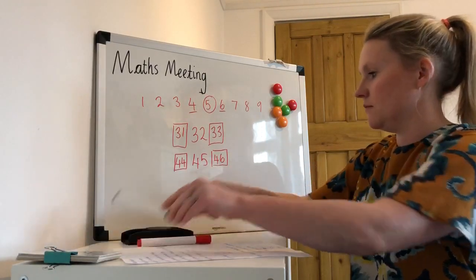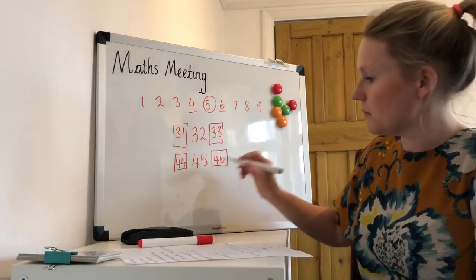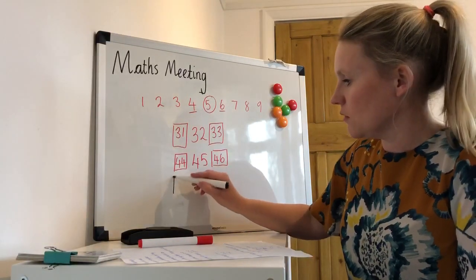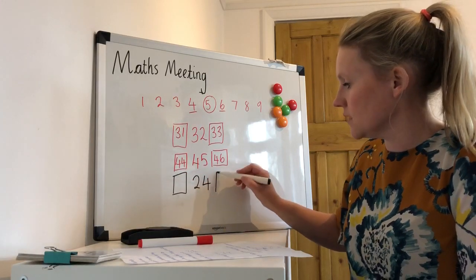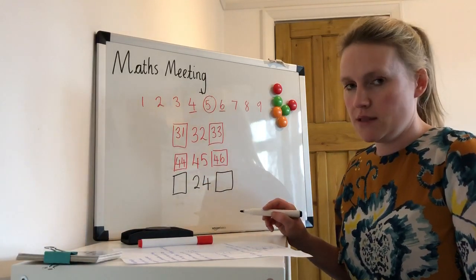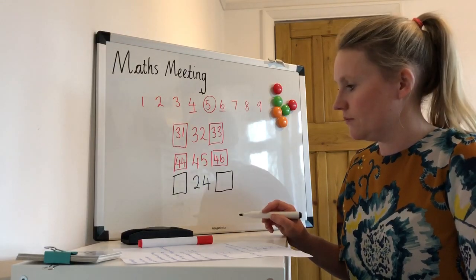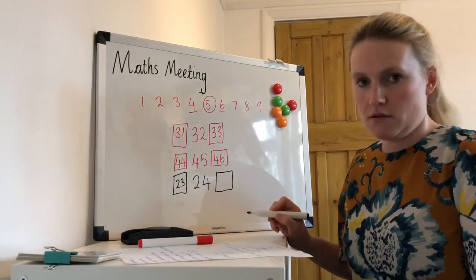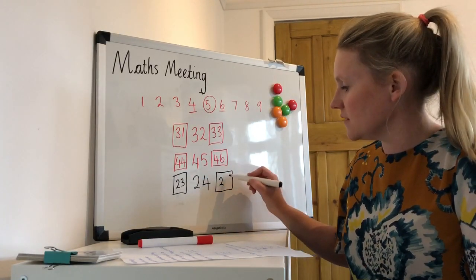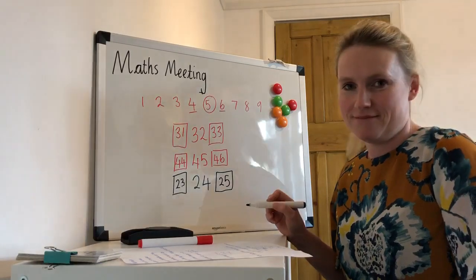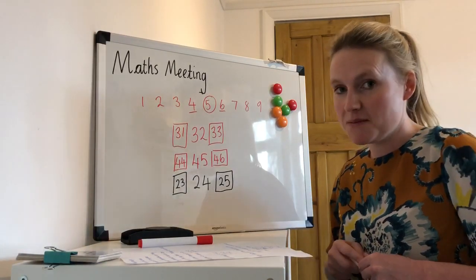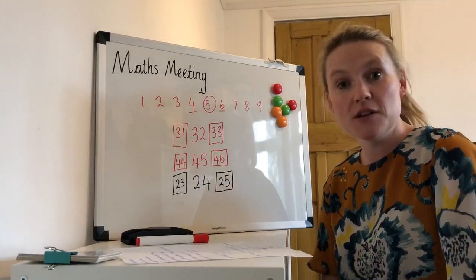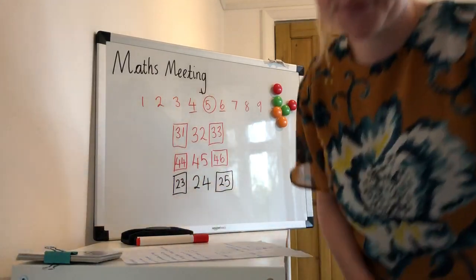And the final one — we're going to look at the number 24. Can you tell me what one less than 24 is, and one more than 24 is? One less is 23 and one more is 25. Thank you very much for watching my maths meeting today, and hopefully you can tune in for the next maths meeting. Have a great day — bye bye!